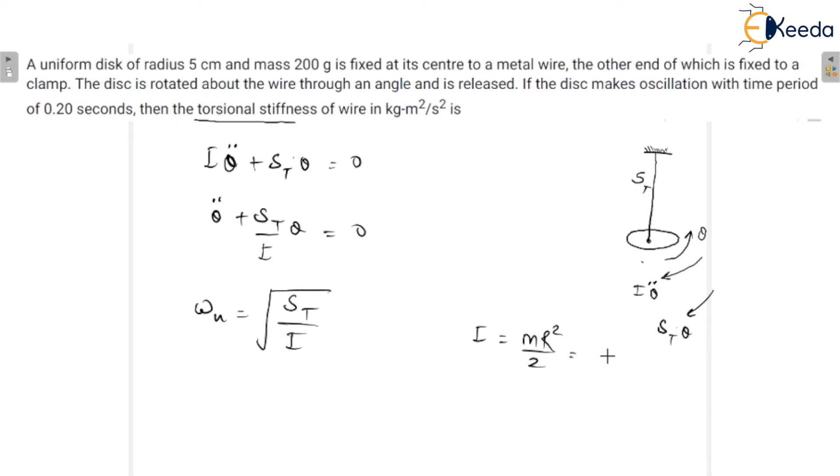What is the value of m? That is in grams, it is given, but we have to convert it into kilograms. That means 0.2 kg. And what is the value of radius? That is 5 centimeters, 0.05 meters squared upon 2. So when you solve this, you will get the value of moment of inertia, mass moment of inertia. And it would be 2.5 multiplied by 10 to the power minus 4 kilogram meter squared.